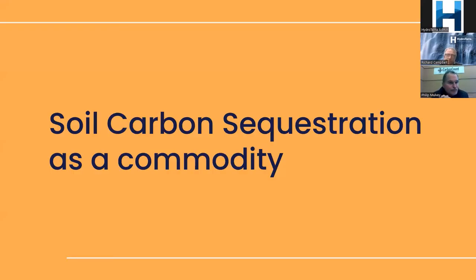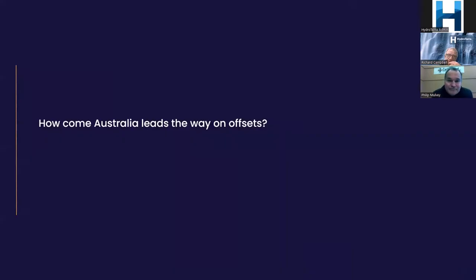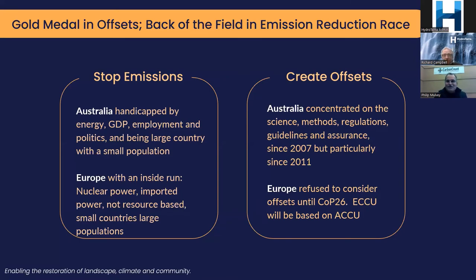That's an overview of soil carbon and the roles it plays. Let's jump into soil carbon sequestration as a commodity. Interestingly, how come Australia leads the way on offsets? It's quite an interesting question because all we hear from the media is that Australia is appalling on carbon. It's true that in terms of the emission reduction race we're well back in the field, but in terms of the offsets we're actually the gold medal standard.